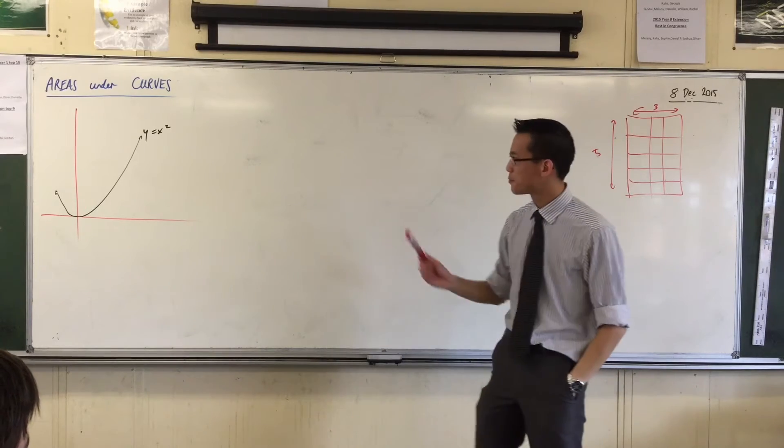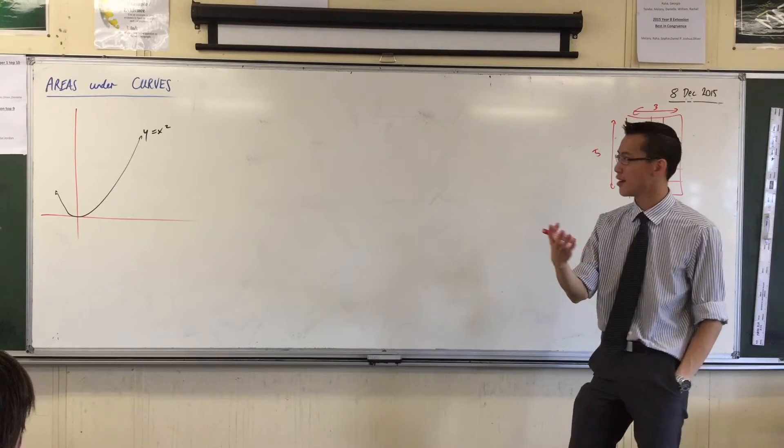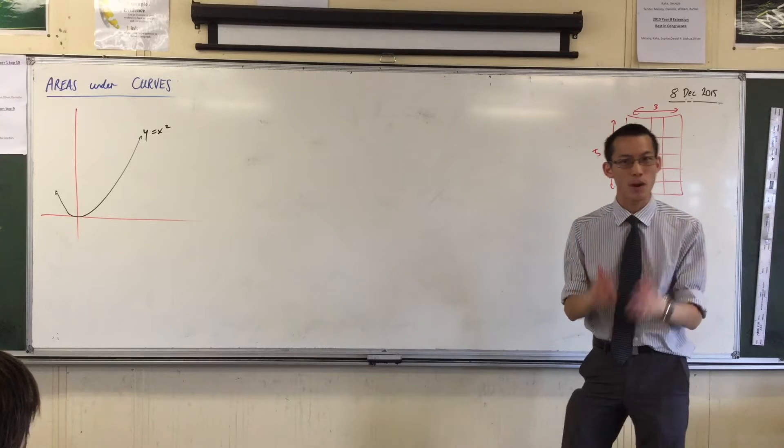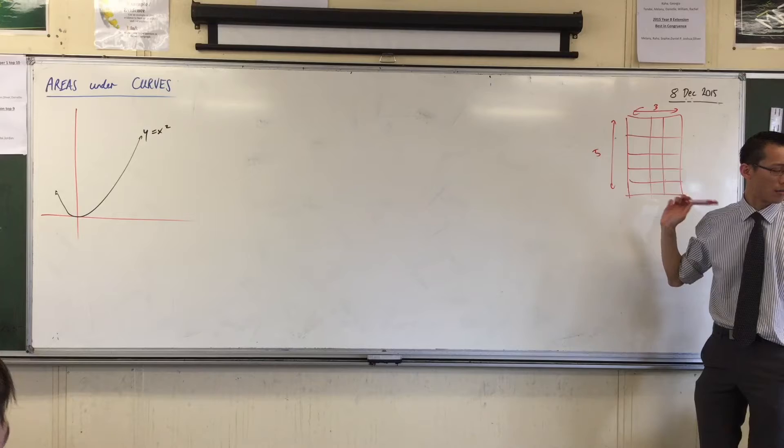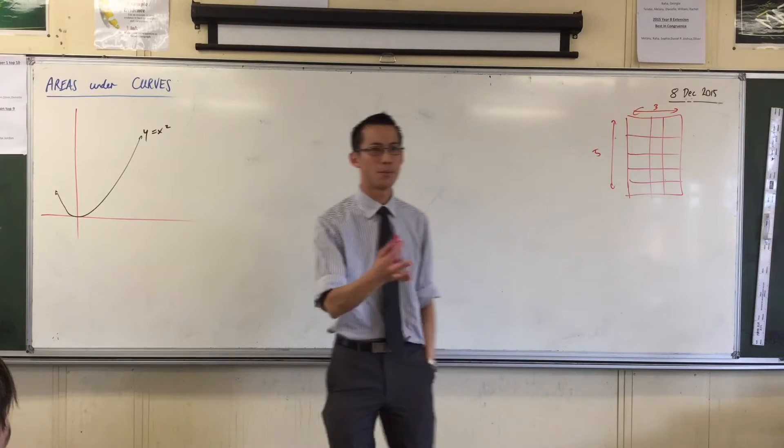And yet, if you've got this graph, this little parabola drawn up, despite its simplicity, it hides very, very deep questions. We know how to find the area of rectangles. What other kinds of shapes do we know how to find the area of? Triangles.